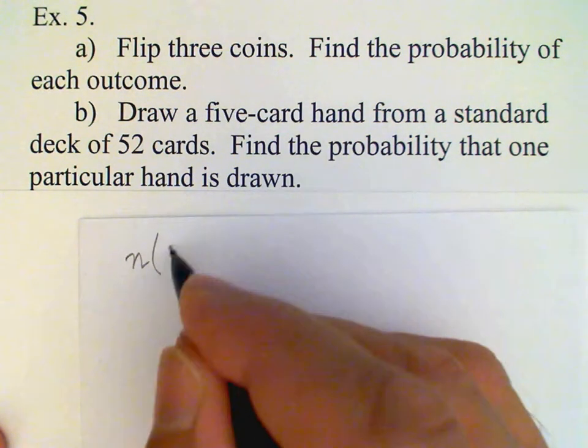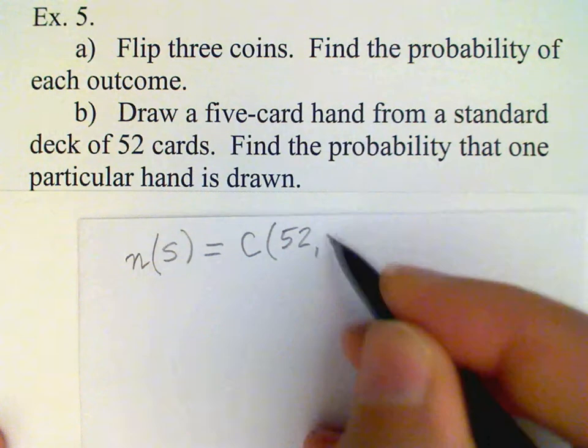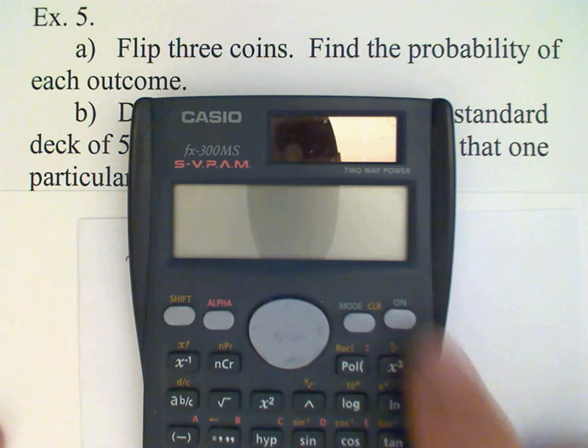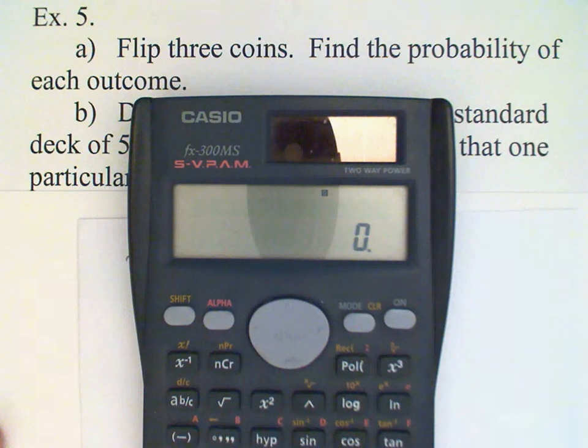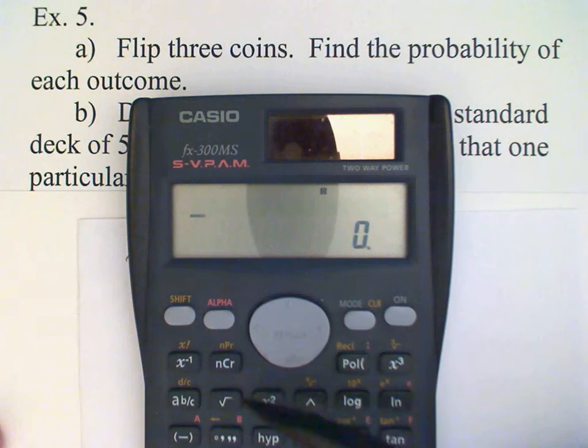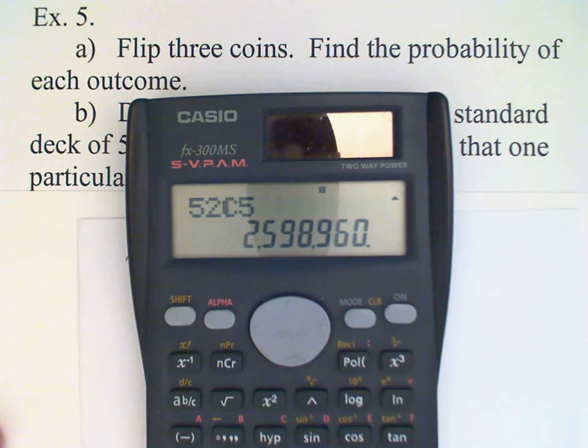Okay, so the number of possible hands in this case is going to be C(52,5). Remember this number from chapter 13. And we can find this easily enough using our scientific calculator or graphing calculator. And remember this button right here is used to find the combination number. So I'm going to go 52, 5. And that gives us the number we're looking for, 2,598,960.